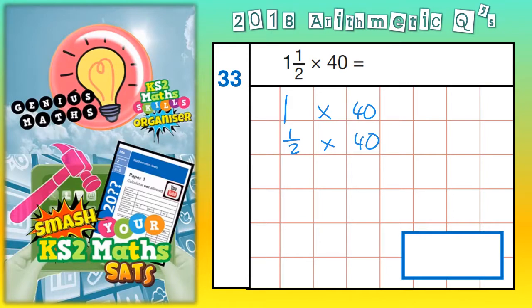And then we're going to do the total. If we do 1 times 40 and ½ times 40, we put the two together, and we'll have 1½ times 40, which is what we're being asked for, and that will be the answer.